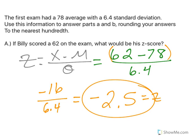Now, that negative z-score implies that Billy's value is less than the mean, right? Because the mean has a z-score of 0, which makes sense. The mean was 78 and Billy's score was a 62.